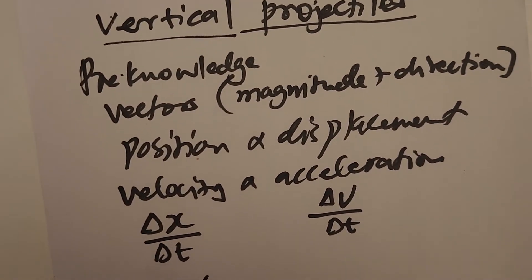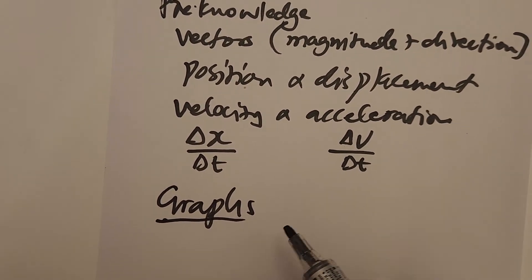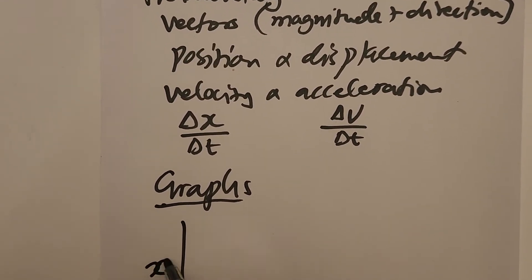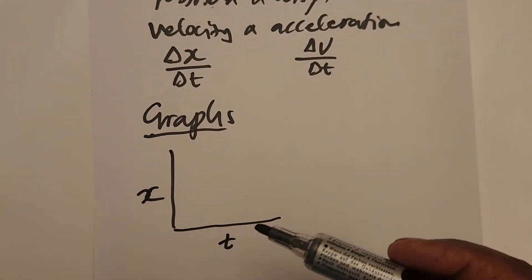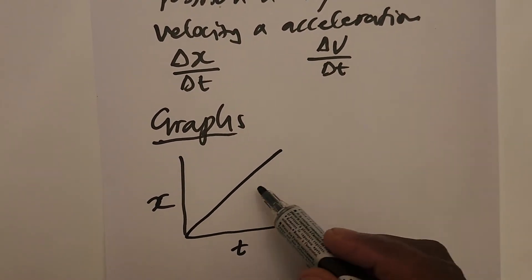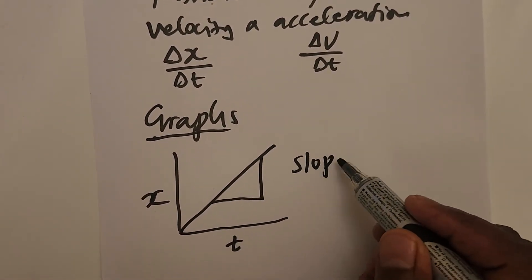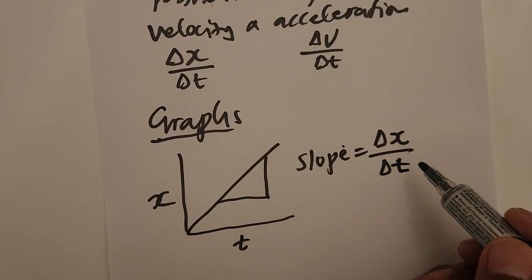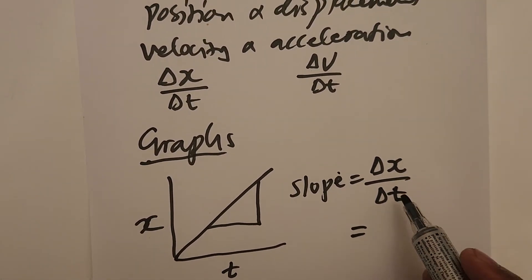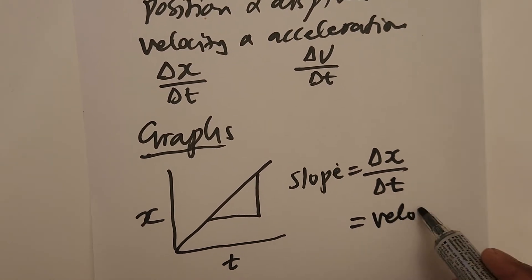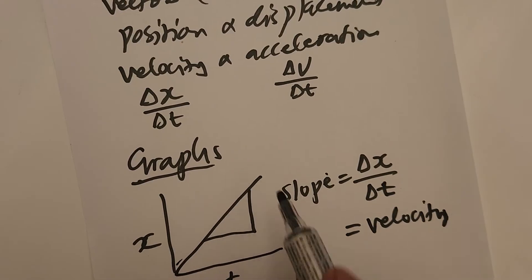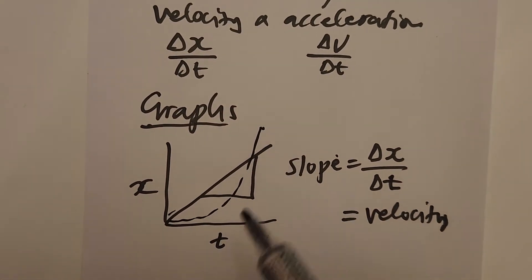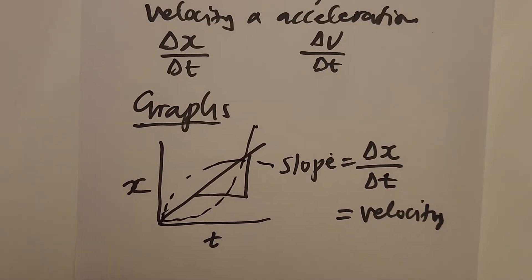On a displacement-time graph or position-time graph, the slope of the line — which is delta y over delta x — represents velocity. If the slope is constant, the velocity is constant. If the slope is increasing, the velocity is increasing; if decreasing, the velocity is decreasing.